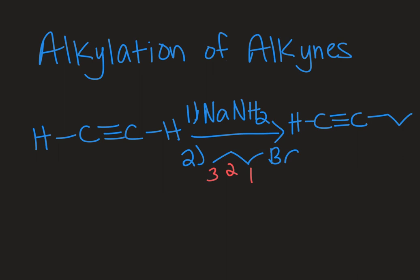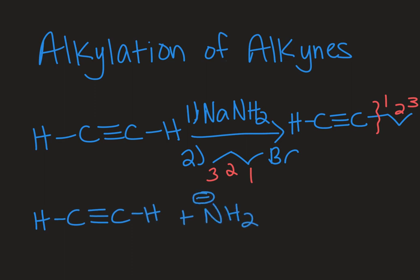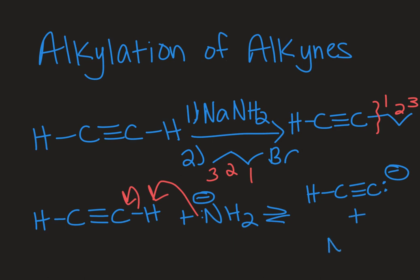I'll draw a squiggle through the carbon-carbon bond we made and number the carbons again so we can tell how the carbon chain connected. The first step is deprotonation. We start with acetylene and introduce a strong base — specifically the amide ion — because acetylene is a pretty weak acid. The amide ion is a small atom with a localized charge and not very electronegative, so it's strong enough to deprotonate the molecule. This acid-base reaction generates acetylide (the '-ide' suffix indicates a negative charge) and ammonia as the conjugate acid of the strong base.